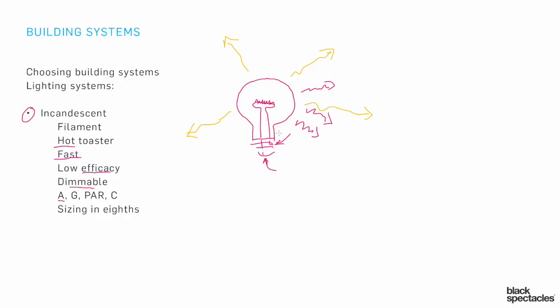In terms of shapes: the A's are the classic light bulb shape; the G's are globes, which are more spherical; PAR's are parabolic and directional; C's and similar ones are shaped like candles. There's a whole series of different shapes. When talking about size, you'll see something like an A19. The A refers to the shape, and the 19 refers to 19 eighths of an inch. For whatever reason, back in the day they chose to measure bulbs in eighths of an inch. Pretty much all bulbs across all different systems — HIDs, fluorescents, and so on — when talking about measurement size, are referred to in eighths of an inch.